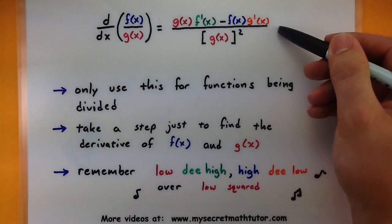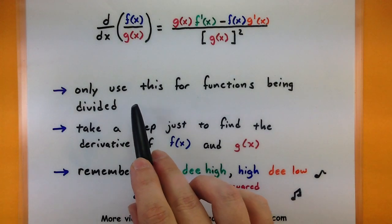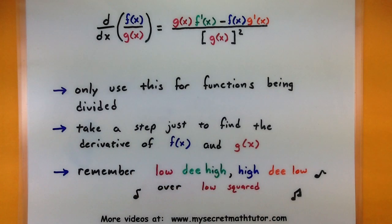Okay, now even though this is a tricky looking formula, don't worry, I will give you some tips on how you can memorize that. First I want to point out that you should only use this when you have two functions that are being divided. You have lots of other rules when they are being added, subtracted, multiplied, but only use this one when you are dividing functions.